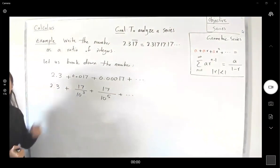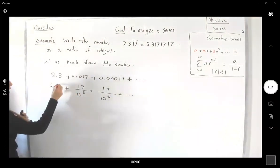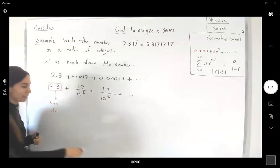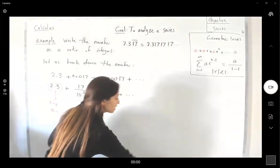Ignore the first term. This term doesn't fit into the pattern. Keep this number as it is. This is just a number. Now find a pattern using the rest of the terms.